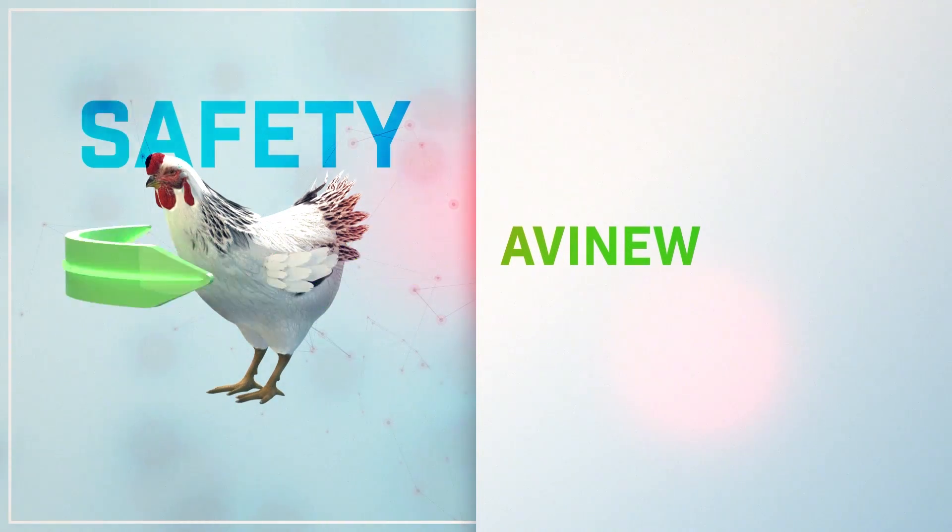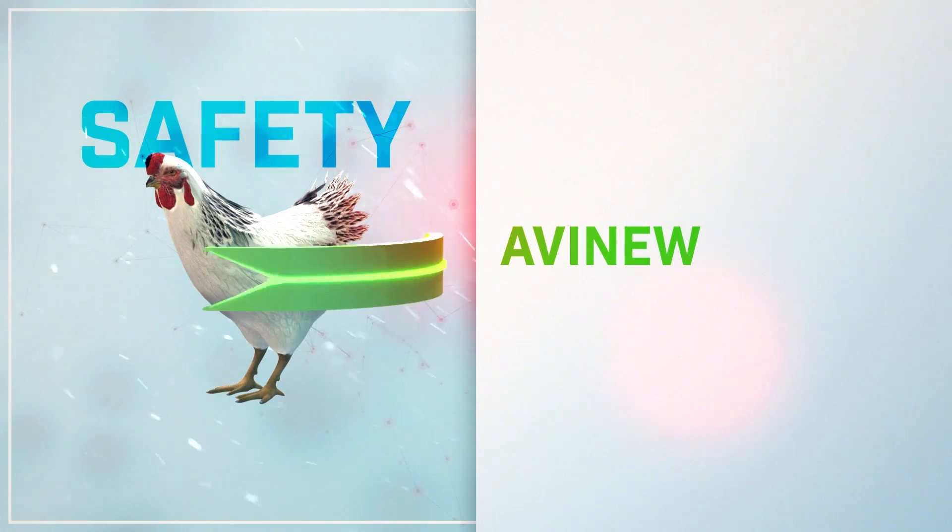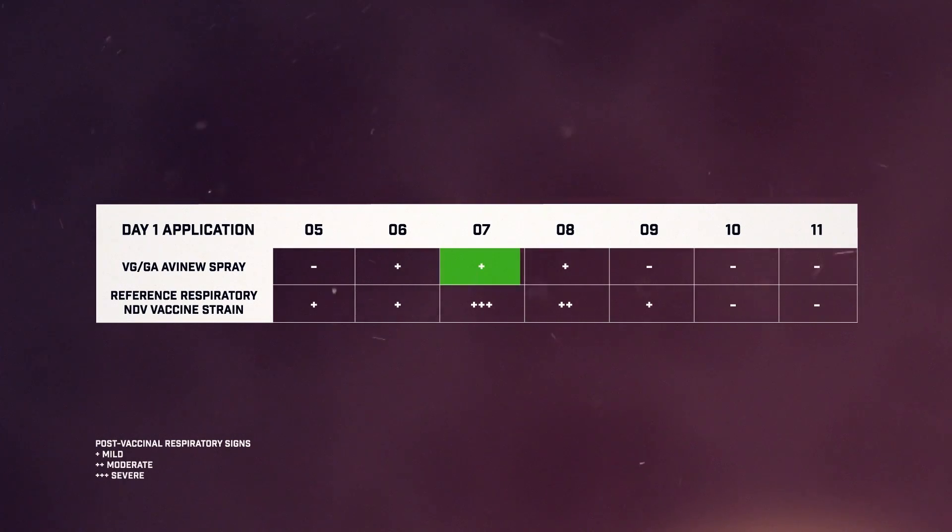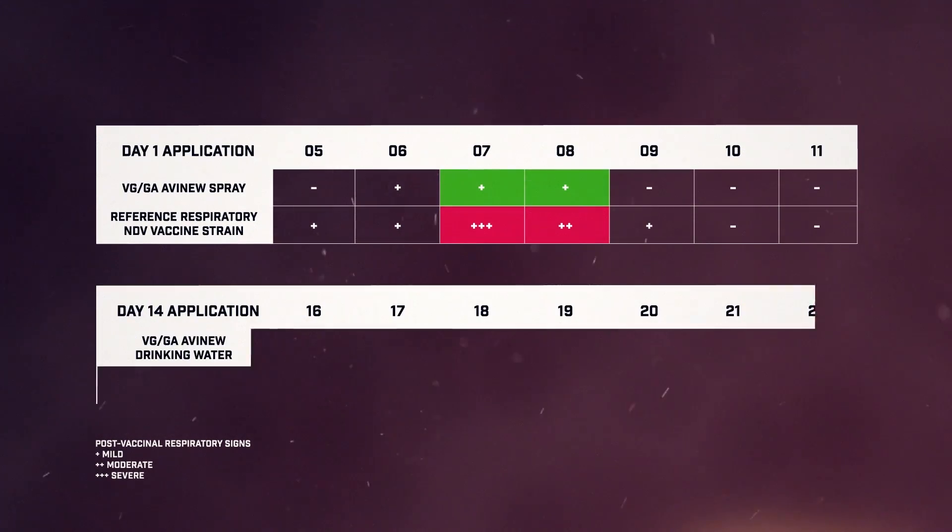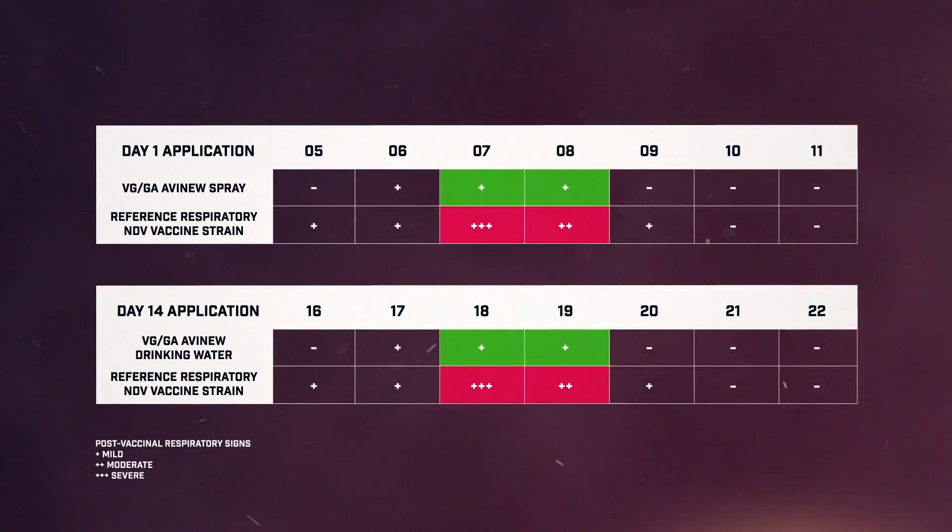The VGGA Avinew vaccine induces virtually no respiratory reactions compared with other respiratory tract tropism live attenuated lentogenic Newcastle disease virus vaccines.